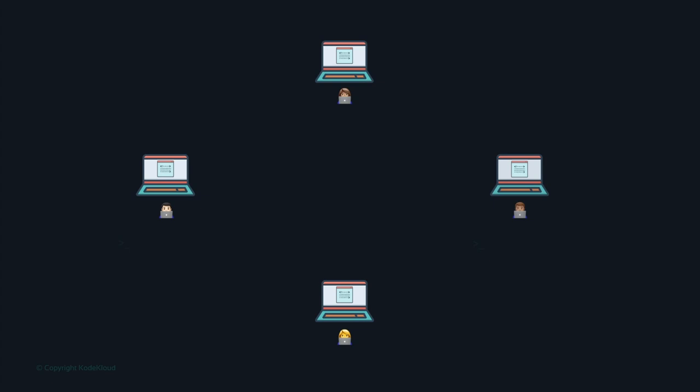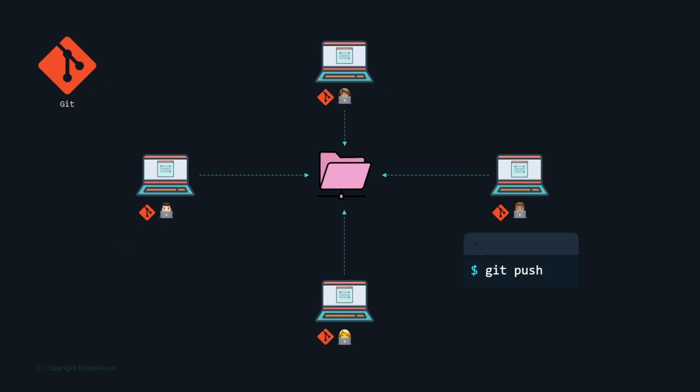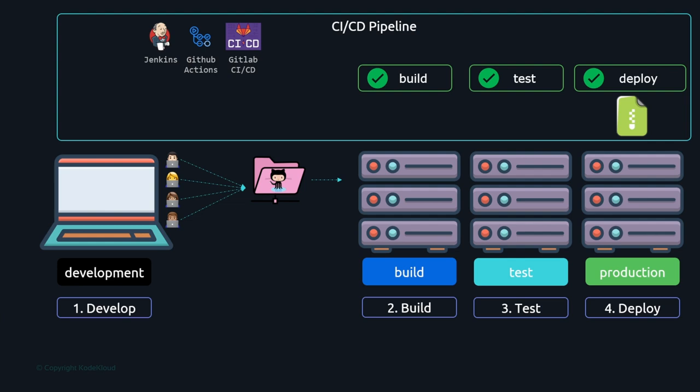DevOps practices, as you probably already know, involve developers collaborating via version control tools like Git when developing applications. You store your code in Git repositories, and every time you have updates, you push your code. Every time you need the latest code, you pull it. You send merge requests or pull requests to get your changes into the master branch, and there are approval processes. Once merged, with CI/CD tools like Jenkins, GitHub Actions, or GitLab CI/CD, the changes are automatically built, tested, and pushed to production environments.